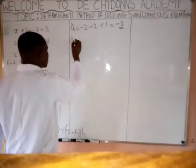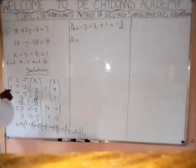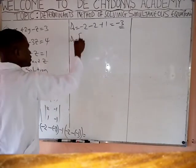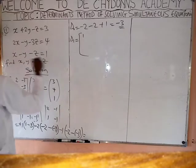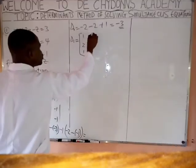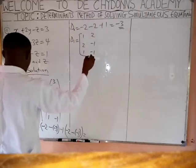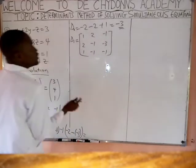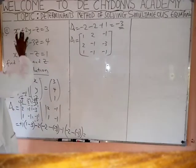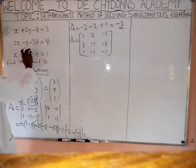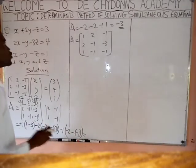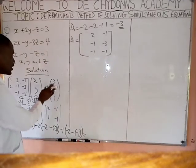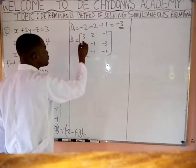Now get delta 1. Delta 1 means you write down the coefficients again: 1, 2, 1; 2, minus 1, minus 1; minus 1, minus 3, minus 1. These are the coefficients of x, y, z. To get delta 1, clean the first column and replace it with the constants 3, 4, 1, and get the determinant.